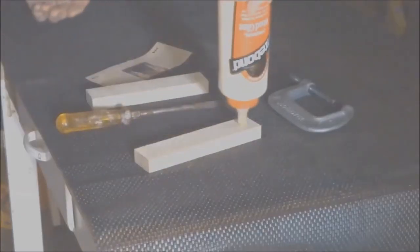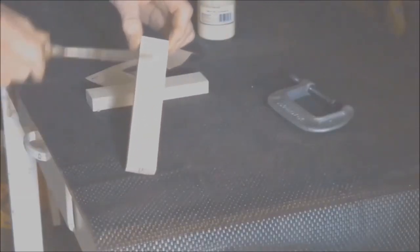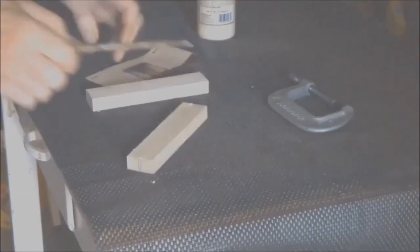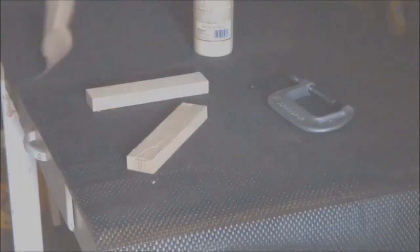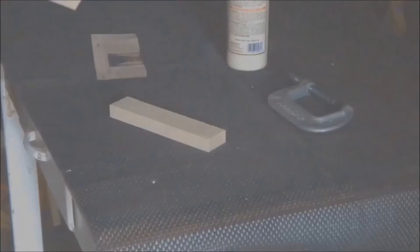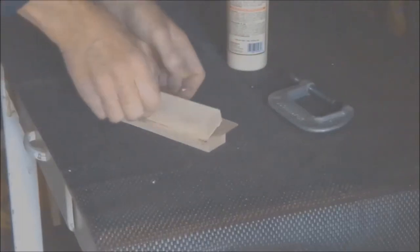First cut the blank lengthways down the middle and adhere glue to both sides. Put a piece of newspaper between the glue surfaces and just clamp up and you've made a newspaper sandwich.